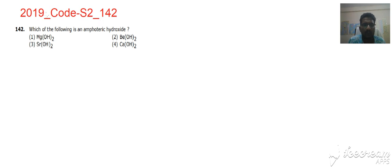Hello students, now we will solve 2019 Code S2 Question 142: Which of the following is an amphoteric oxide? What do you mean by amphoteric? Amphoteric means having both acidic and basic nature.